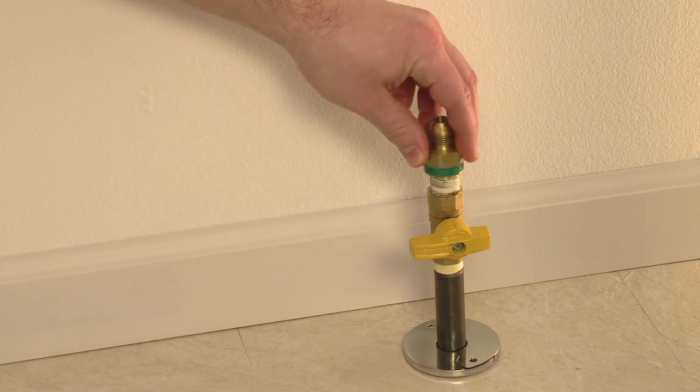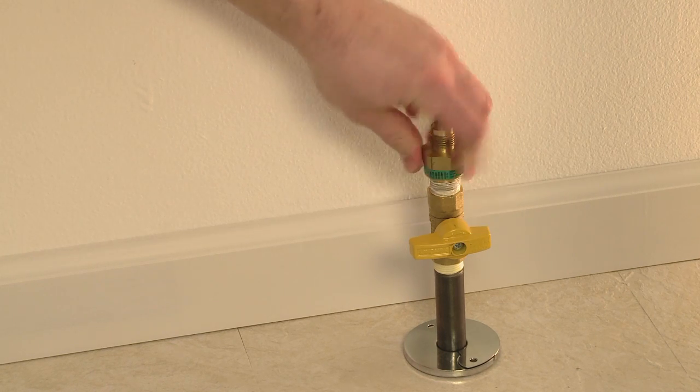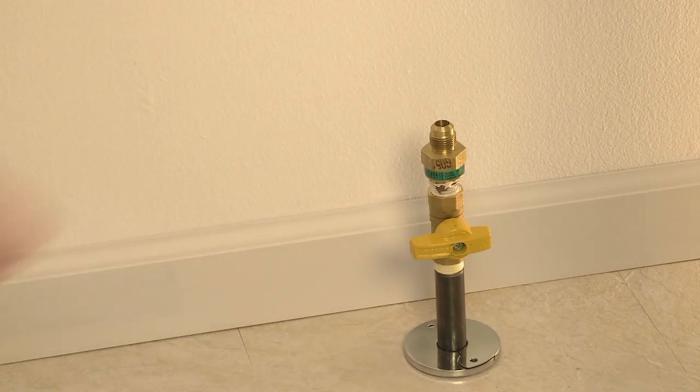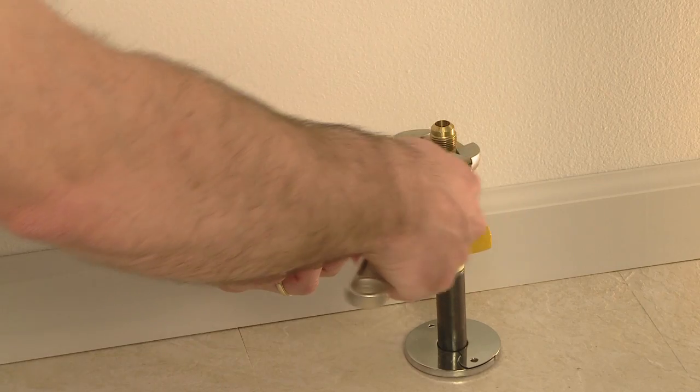Thread the excess flow valve onto the gas ball valve making sure that the arrows on the gas safety valve are pointing in the direction of intended gas flow. Tighten by hand. Place one wrench on the shutoff valve and wrench tighten the excess flow valve with the second wrench.